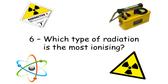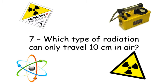Question number six: Which type of radiation is the most ionizing? Question number seven: Which type of radiation can only travel 10 centimetres in air?